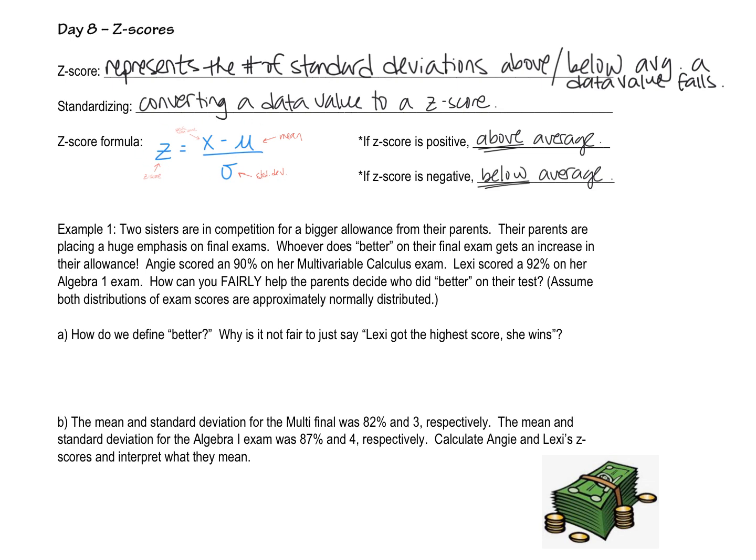If your Z-score was positive, it would tell you above average, and you would want your Z-score to be a really high number because that would mean you scored many standard deviations above the mean. If your Z-score is negative,